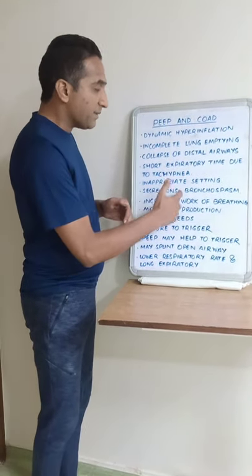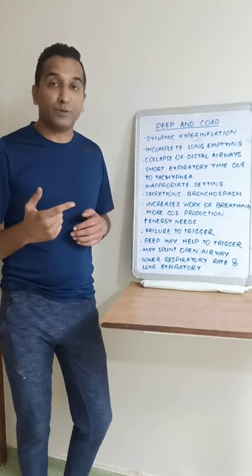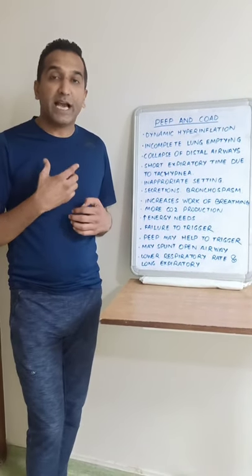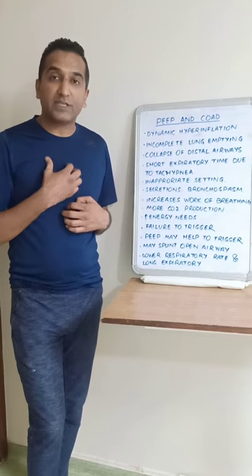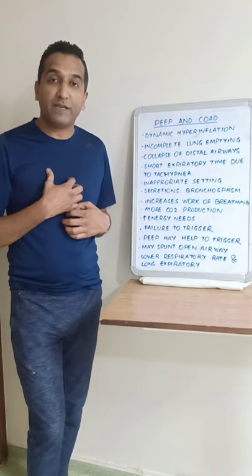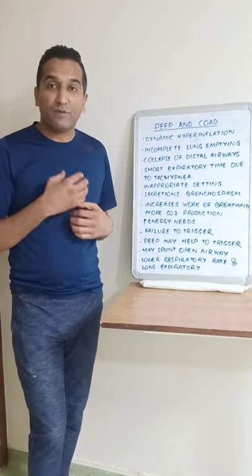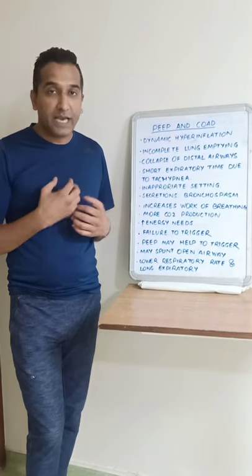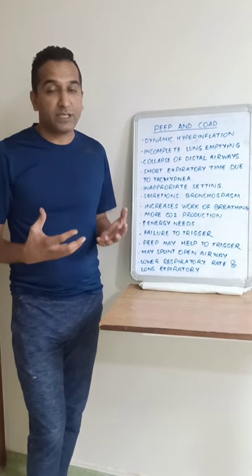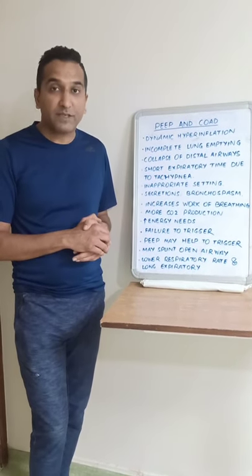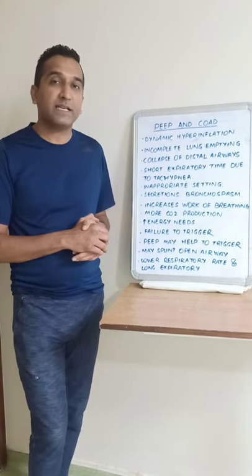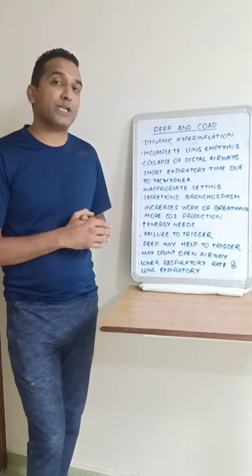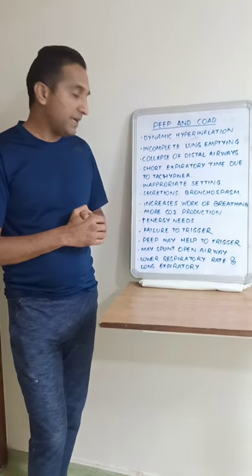Secretions and bronchospasm also contribute. Patients may have a lot of secretions in both upper and lower airways, which can cause obstruction of the lumen and collapse of the distal airways, further leading to trapping of air in the lungs.